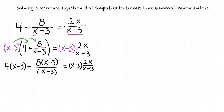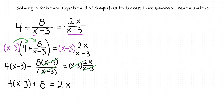At this point, we can simplify 8 times the quantity x minus 3 divided by the quantity x minus 3 to 8, and we can simplify the expression the quantity x minus 3 times 2x divided by the quantity x minus 3 to 2x. This leaves us with 4 times the quantity x minus 3 plus 8 equals 2x. Now our equation is written without any fractions, so we can solve for x.